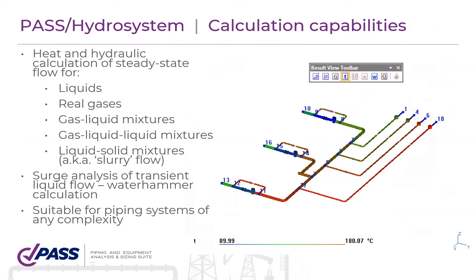Hydra System performs heat and hydraulic calculations for steady-state flow and for different types of fluids: liquids, real gases, gas-liquid mixtures, gas-liquid-liquid mixtures for three-phase flow, and mixtures of liquid and solid particles — what you would call settling slurry flow. Hydra System also allows you to perform surge analysis and transient flow analysis for liquid flow, including calculation of the water hammer phenomenon. It is suitable for any piping systems of any complexity.